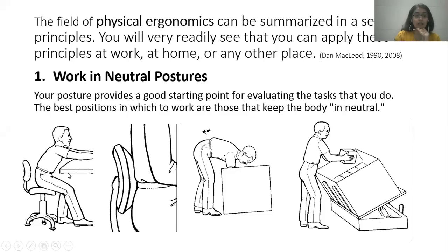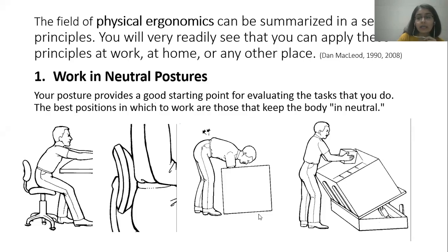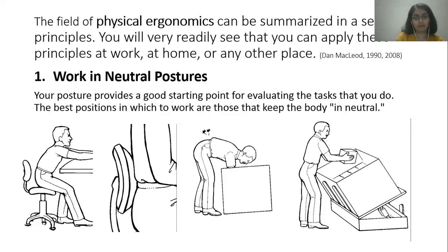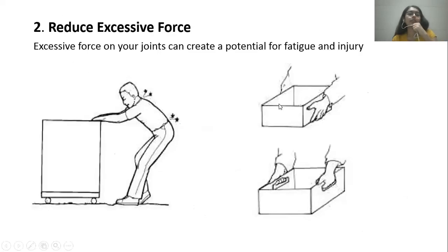Another postural modification example: if a person is bending again and again to unload boxes, you can lift the box up so he does not have to bend repeatedly. He can stay in a neutral spine position and work with his hands. The second principle is to reduce excessive force on any part of the body — whether a muscle, joint, or any structure.